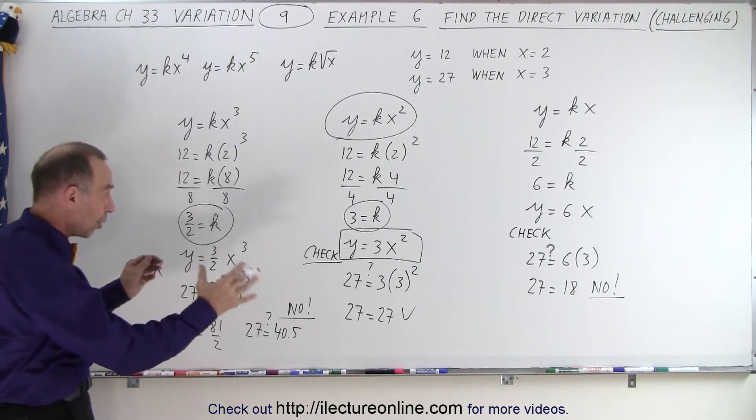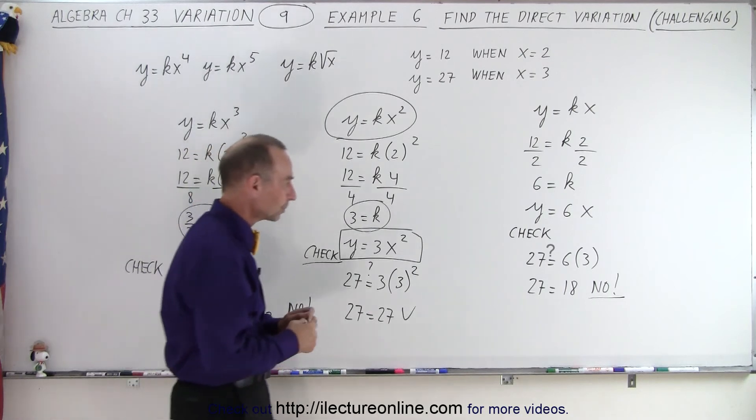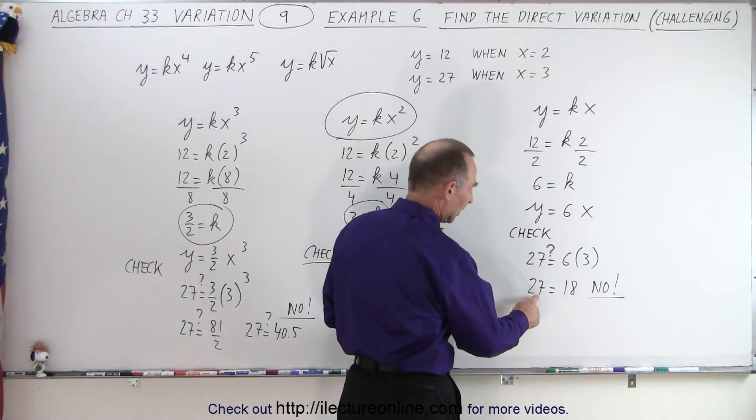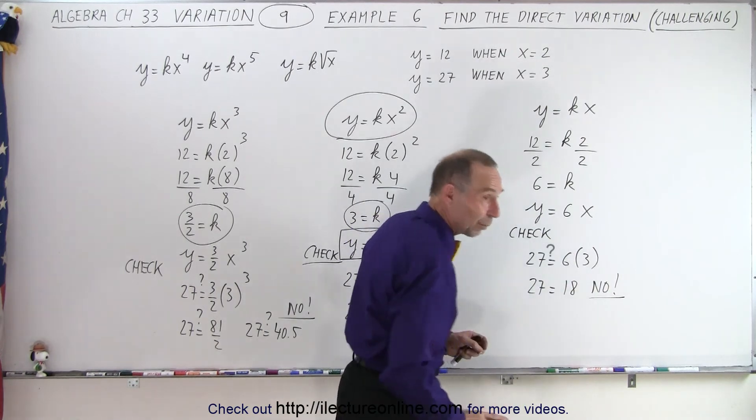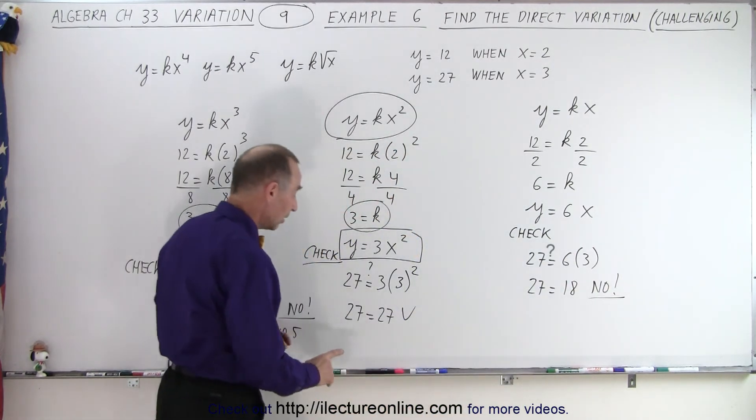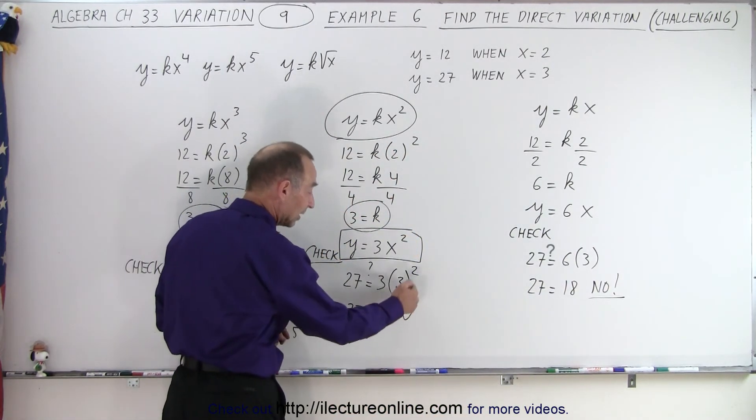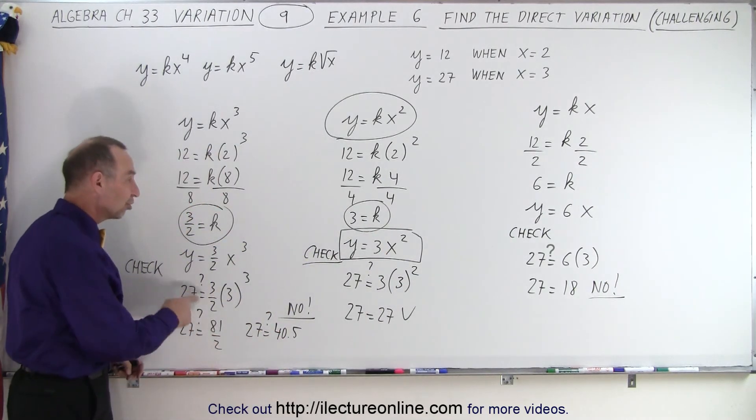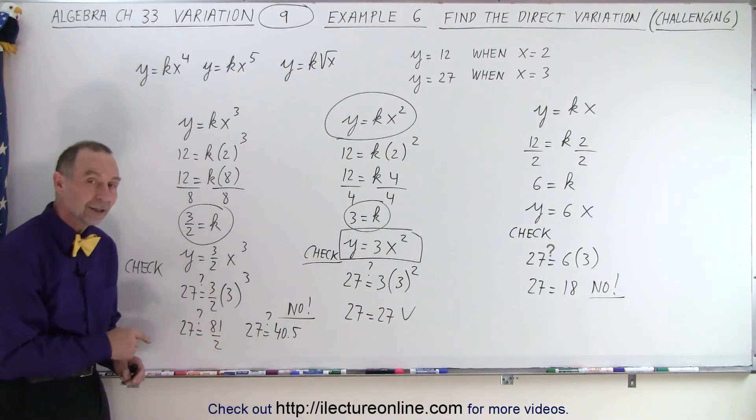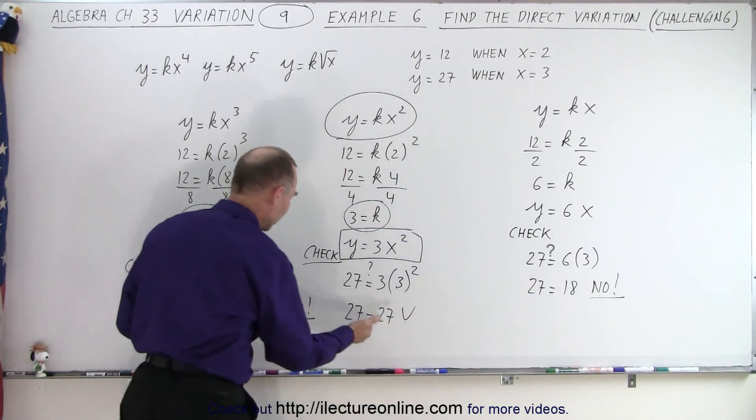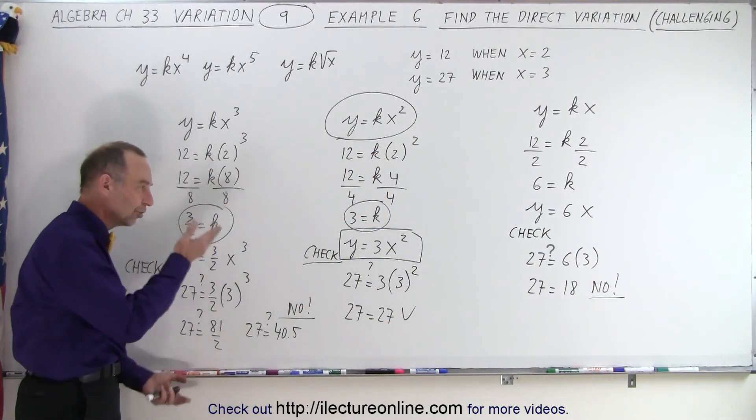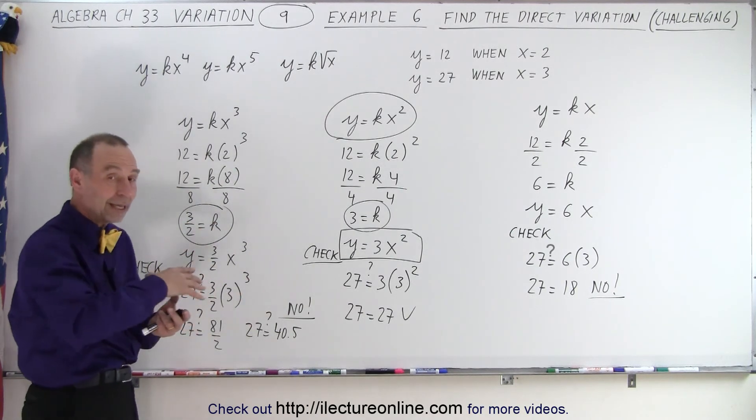And so we're going to actually show you some other examples where you can see the trend. But let me at least say, let's see the trend. Over here, the left side was bigger than the right side. It wasn't equal, so that wasn't the correct solution. Here, the left side equals the right side, and it was the right solution. Here, the left side is smaller than the right side.